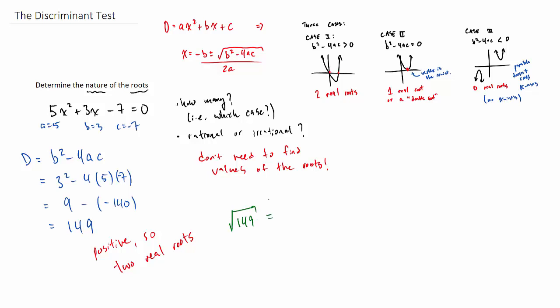Then we want to check, can we simplify the square root of 149? We can try that a bunch of different ways by making a factor tree or dividing it by perfect squares. It turns out we can't, so that's actually an irrational number. So for this particular equation we say that we have two real irrational roots.